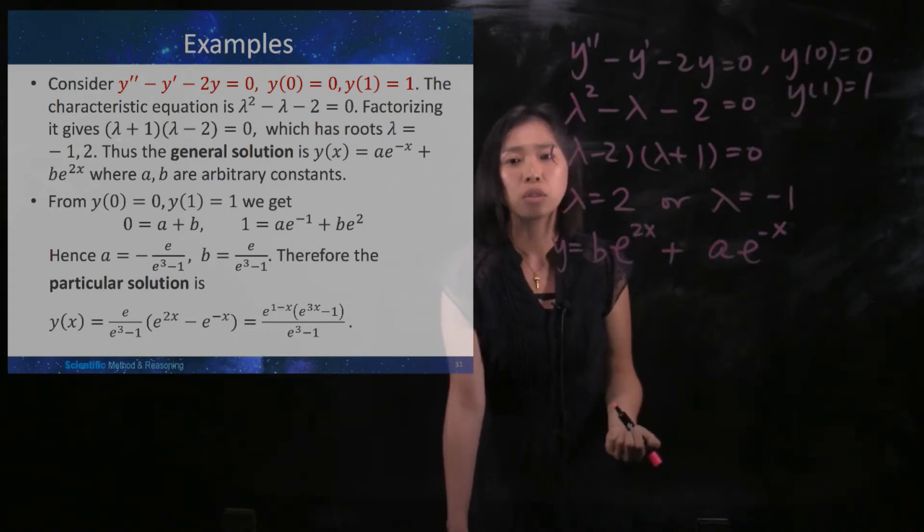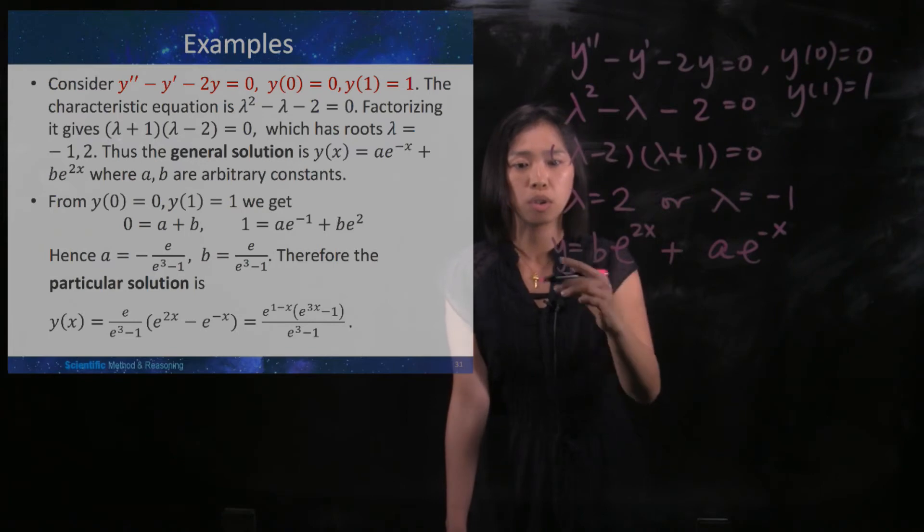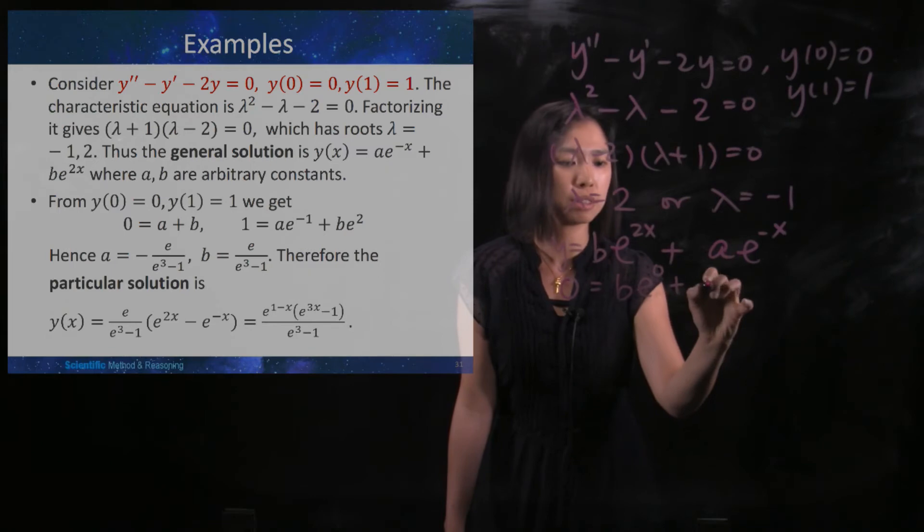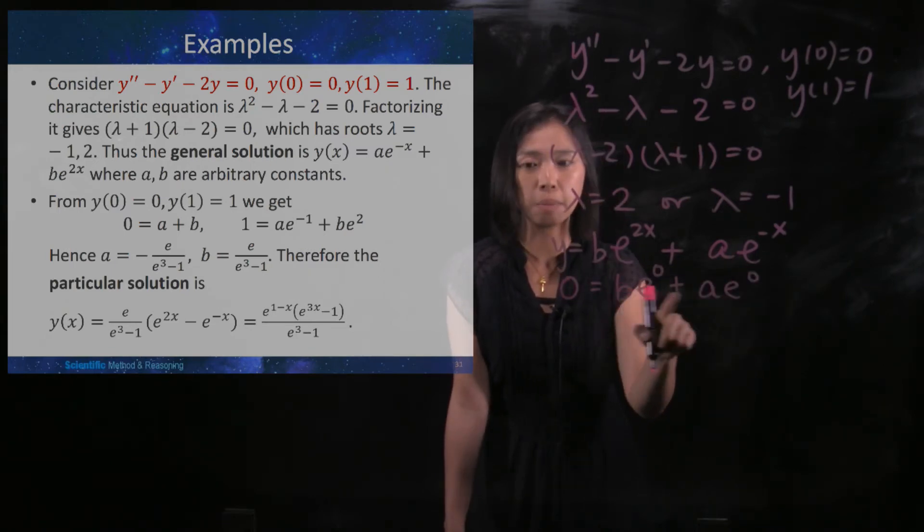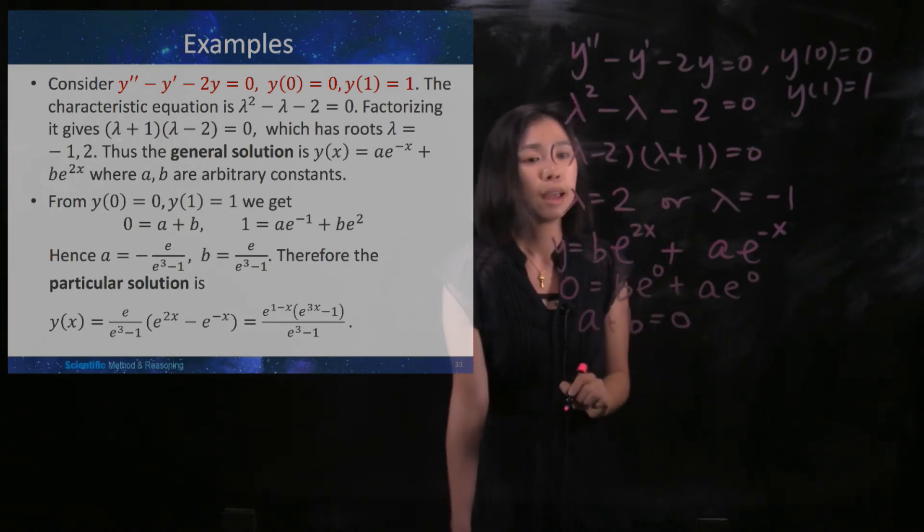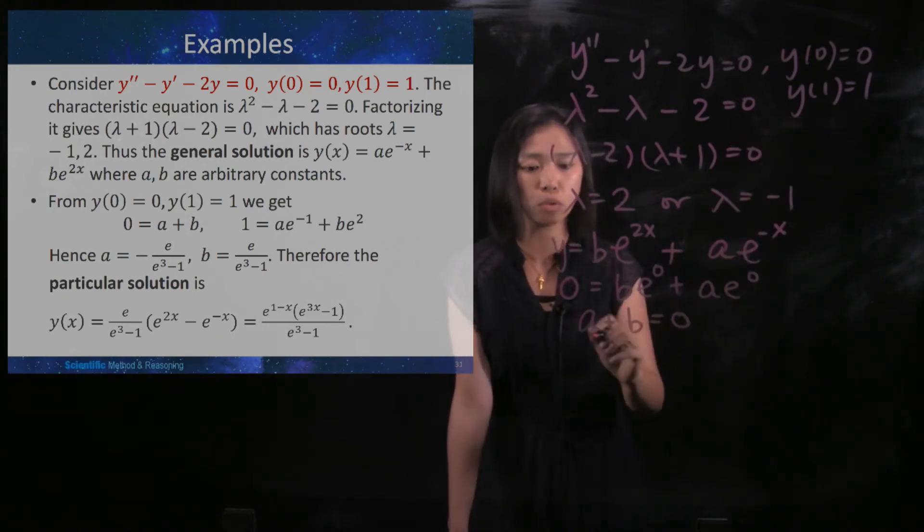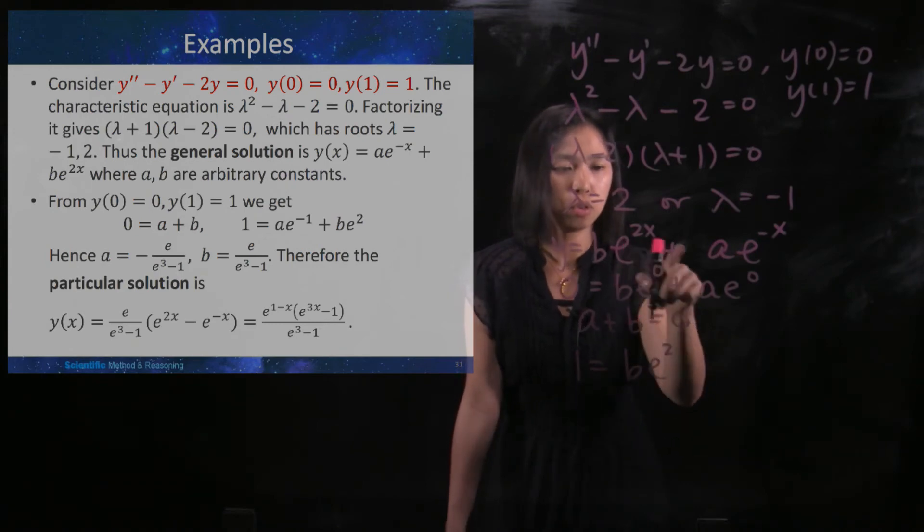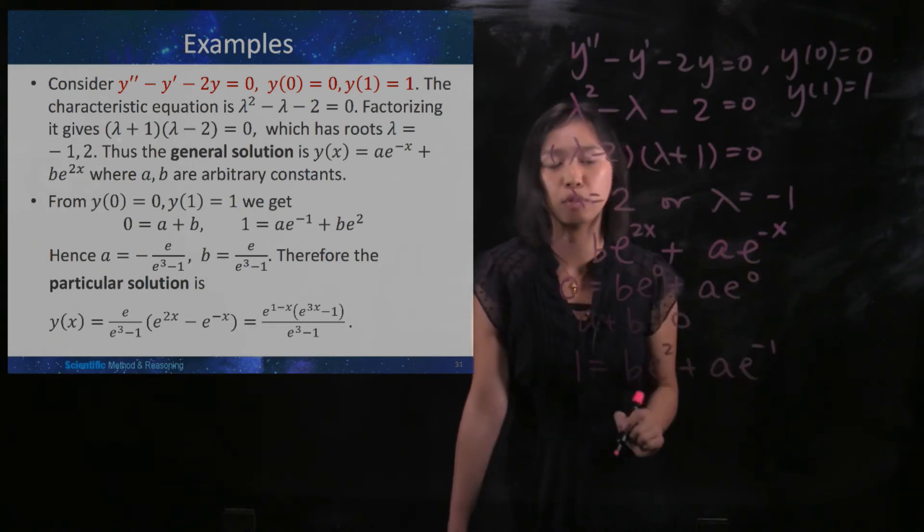So we may start with zero. When we substitute x = 0, y would also be 0. So 0 = be^0 + ae^0, which means a + b = 0. And then when we substitute x = 1, then your y would also be 1. So y = 1 = be² + ae^(-1).